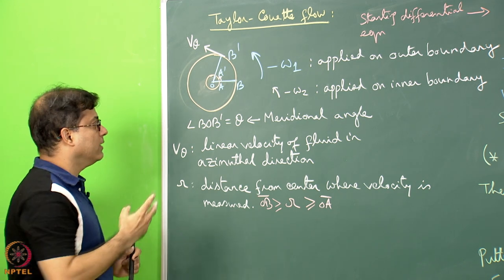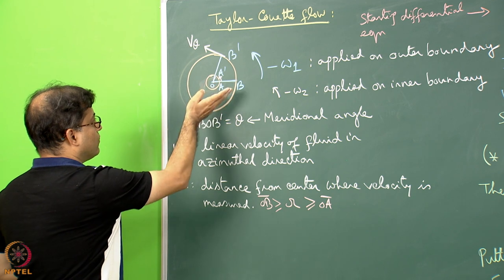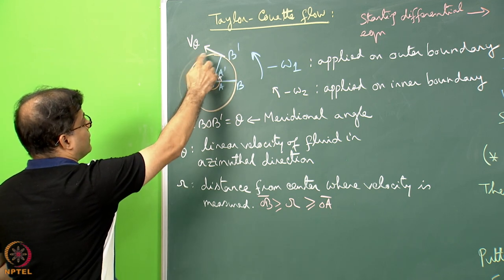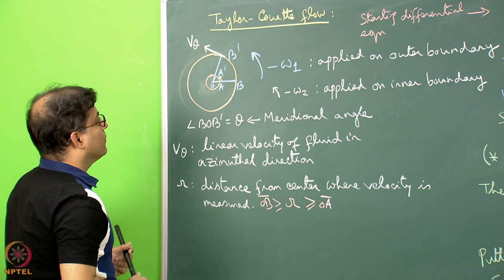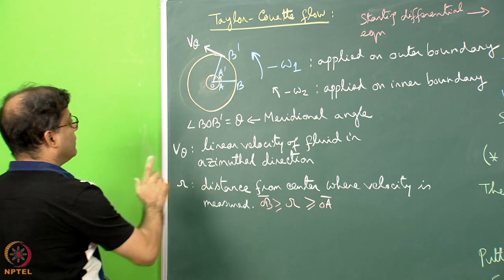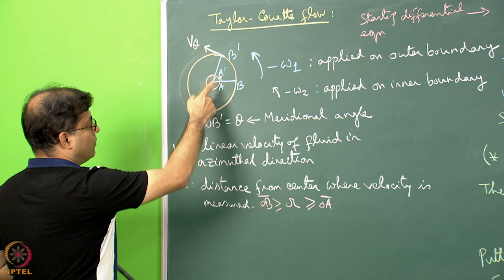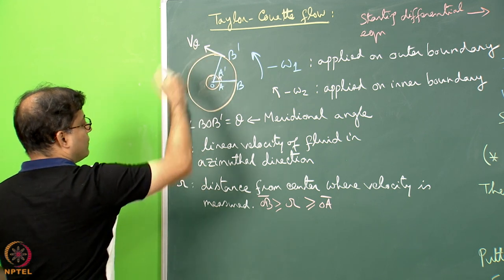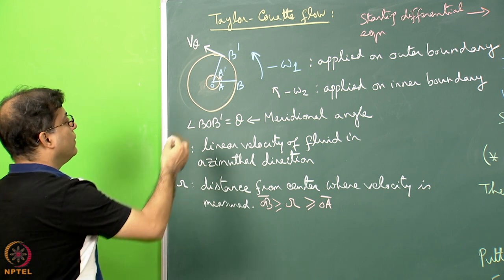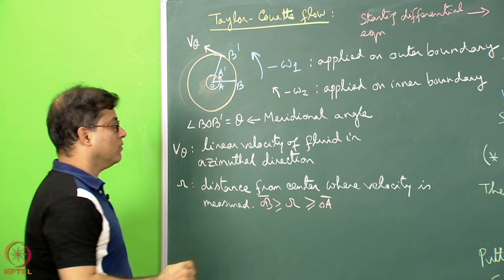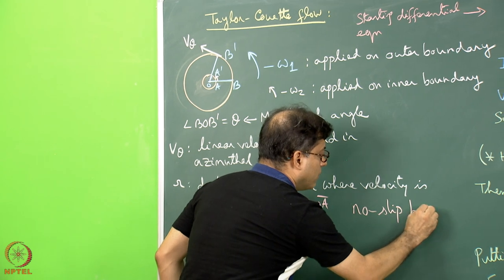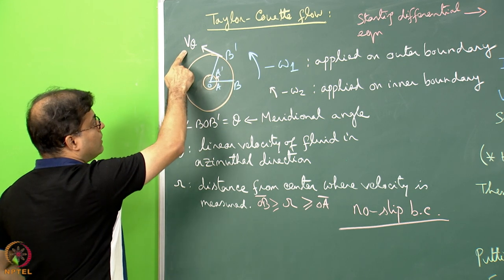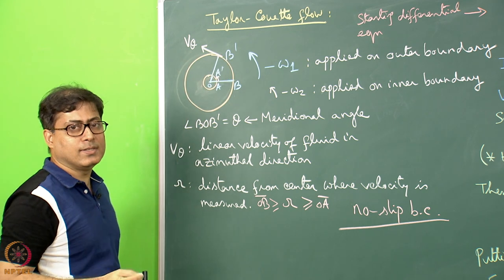For certain values of omega 1, omega 2, and the distances OA and AB, it is possible that OAB straight line will also be OA dash B dash as a straight line. If I draw a tangent at B dash, then V theta is the velocity at point B dash. V theta is the linear velocity of the fluid in the azimuthal direction — specifically, the fluid in contact with the upper boundary. We are considering a no-slip boundary condition, meaning the fluid in contact with a rotating boundary picks up the same velocity as that boundary.